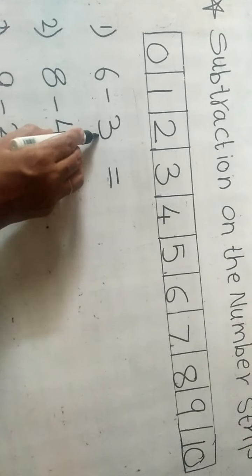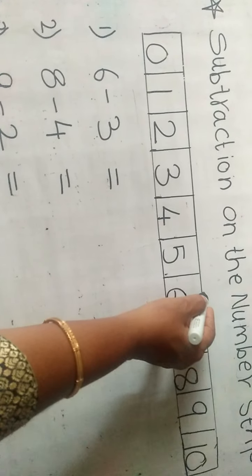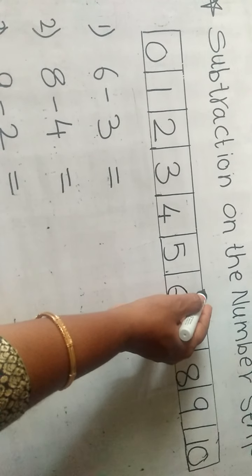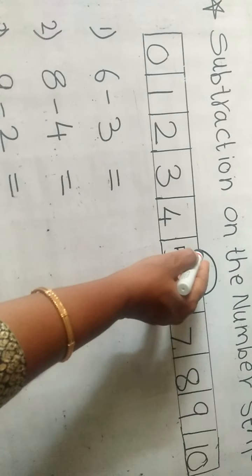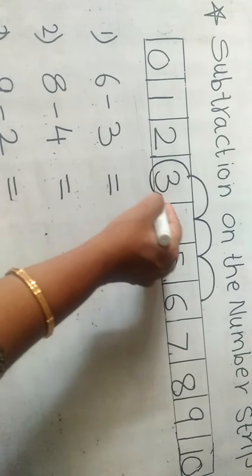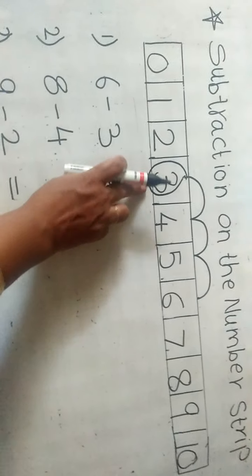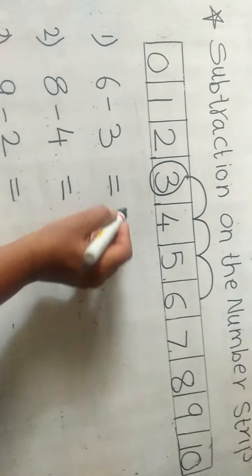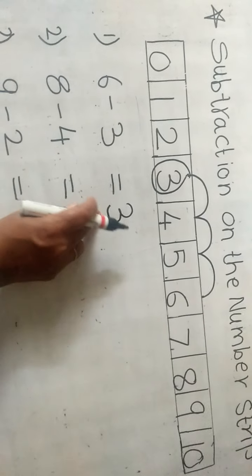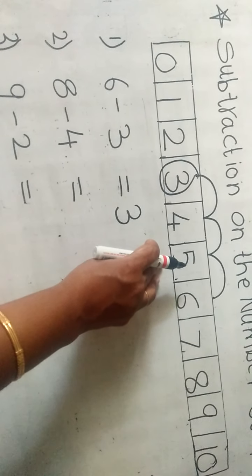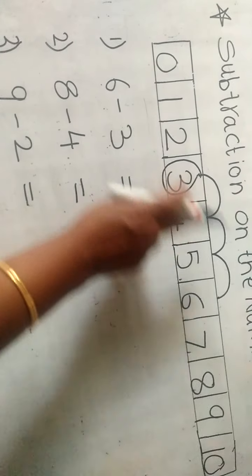But how many steps backward? 6 minus 3 — we have to start from 6 and we have to go 3 steps backward. Let's do: 1, 2 and 3. We come here near number 3. So 6 minus 3 is equal to 3. In subtraction, when we do subtraction on the number strip, we have to go backward.